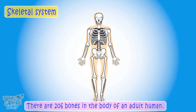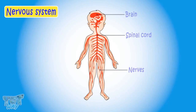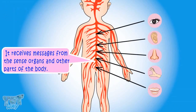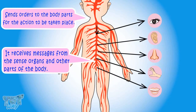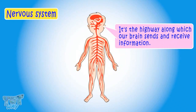Now let's learn about the nervous system. The nervous system consists of the brain, spinal cord, and different types of nerves. It receives messages from the sense organs and other parts of the body and sends orders for action. The nervous system is like a highway along which your brain sends and receives information about what is happening in the body and around it.